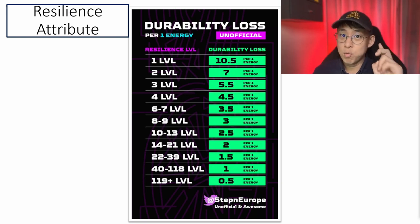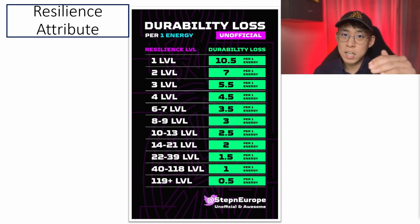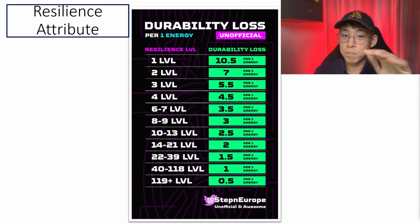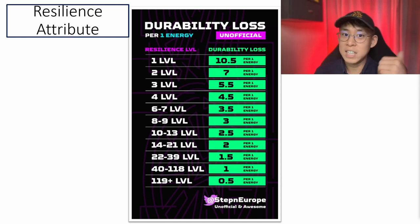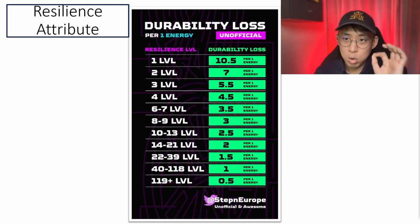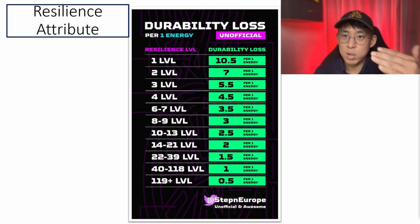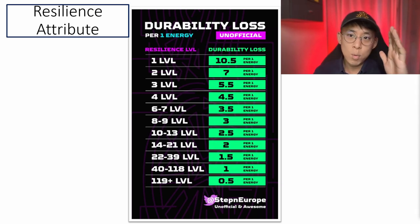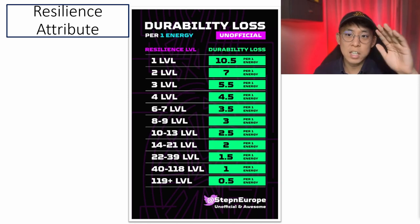The second tip is about the resilience attribute and how it functions. It actually functions differently from efficiency — it's more stepwise. There is a chart released by STEPN Europe and, although unofficial, it is considered accurate as it was compiled from community data. At resilience level 1, the durability loss is 10.5 per energy. Going up to level 2, the durability loss drops to 7. This decreases quickly with increasing resilience. From level 1 to level 4, durability loss decreases with every level, but from level 5 to level 7, it takes 2 to 3 levels before dropping to the next durability loss level.